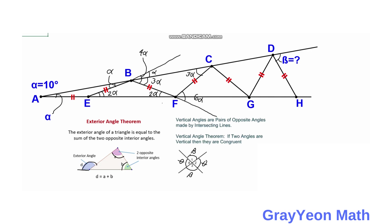Since we get 6 alpha here, and angle BFE is a vertical angle with the corresponding angle at F measuring 2 alpha, then this interior angle measures 6 alpha minus 2 alpha, which is 4 alpha. Triangle FCG is also an isosceles triangle, so the angles opposite the congruent sides are equal, giving us 4 alpha.